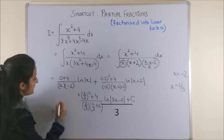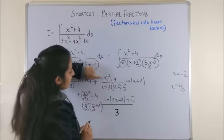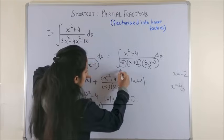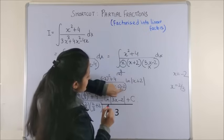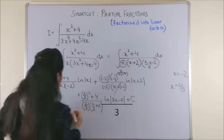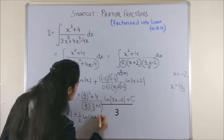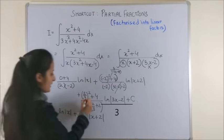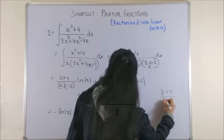So on simplifying, we get minus log mod x. This shall give us four plus four, that's eight, upon minus two into minus six minus two, which is minus eight. So this part gets cancelled and you're left with plus half log mod x plus two.